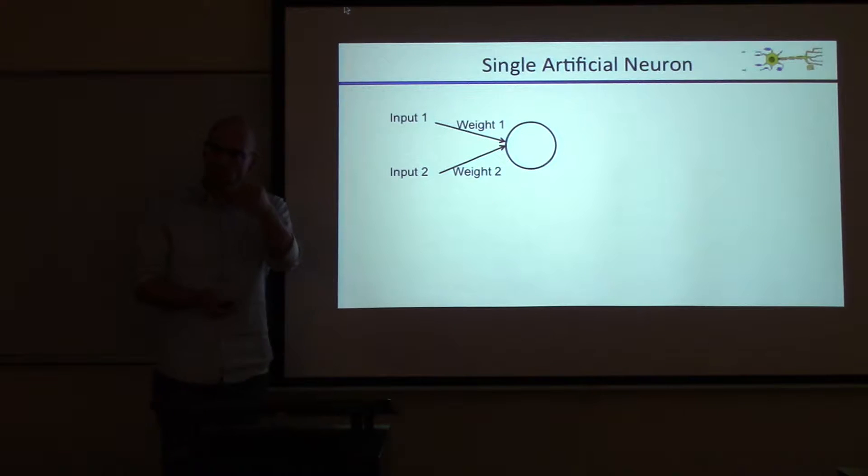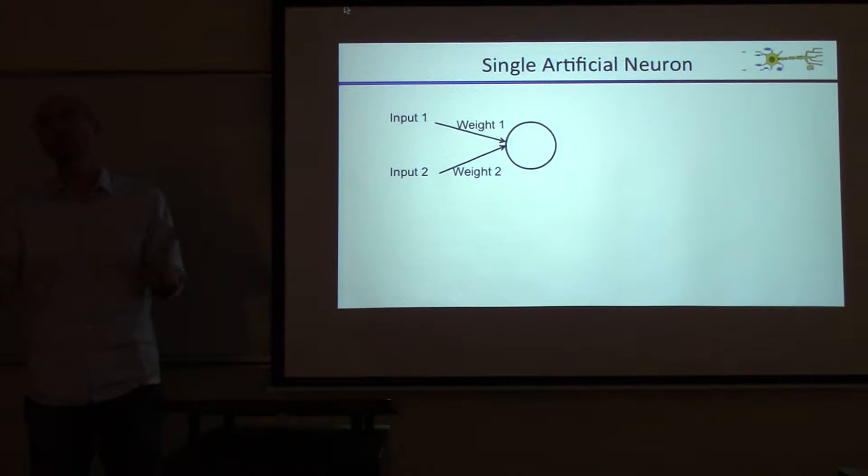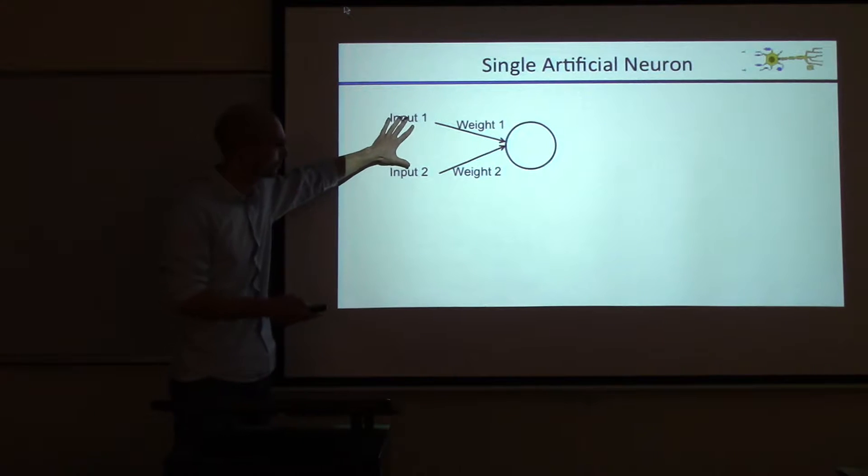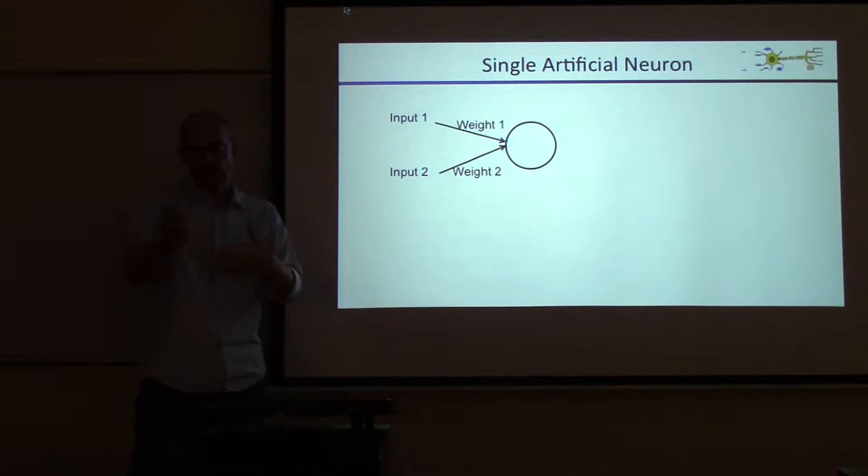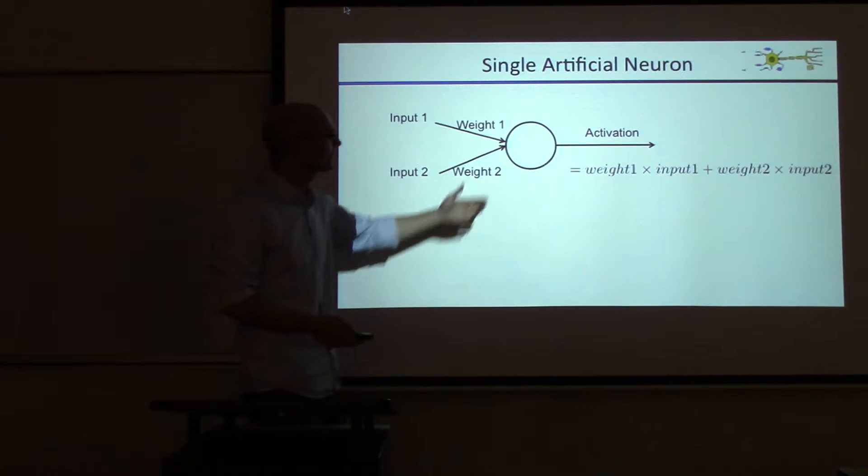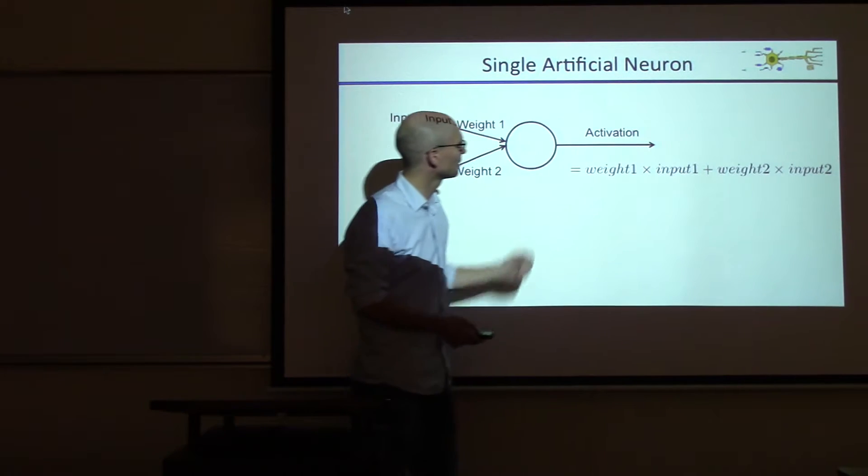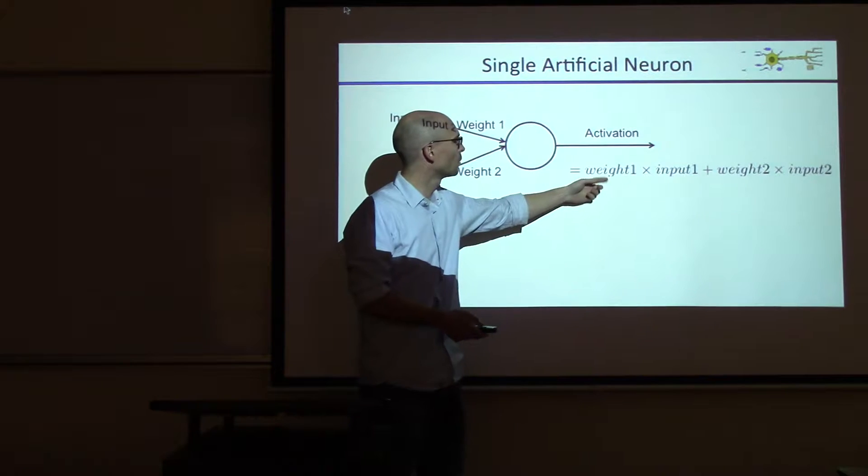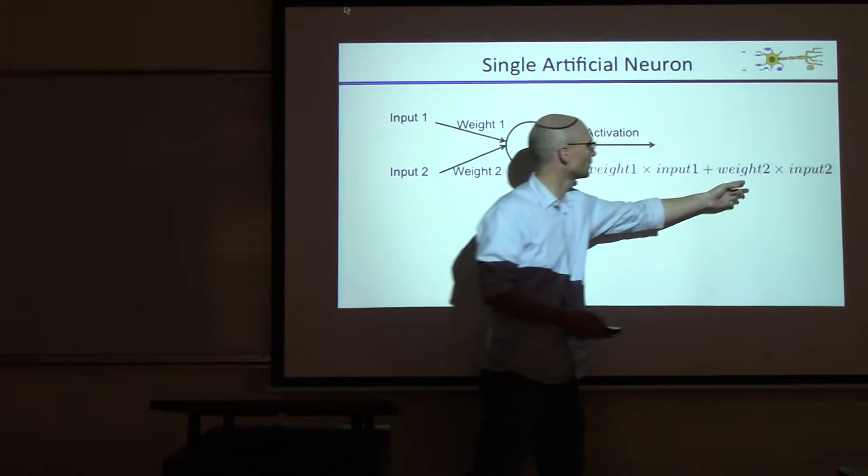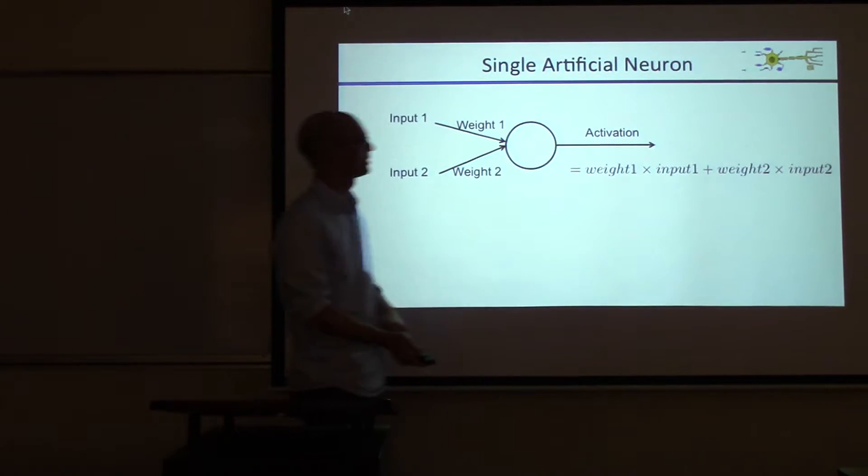What this will do is associate a weight with each of these input channels. That way you can make one input channel more important than another one. If you have a thousand inputs, you have a thousand weights of how important each one is relative to each other. And then the activation that you trigger on the output is weight one times its input signal plus weight two times its input signal.